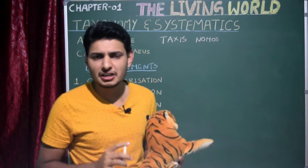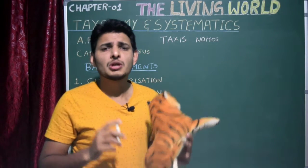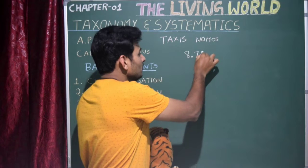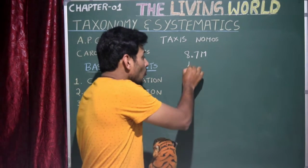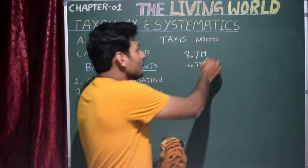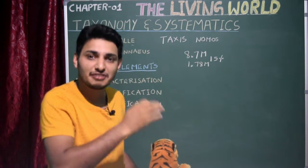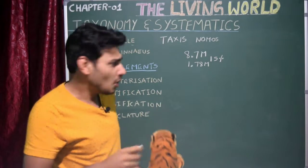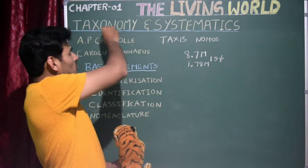Taxonomy is the branch of biology which deals with identification and nomenclature of all living organisms and their classification based on similarities and differences. The total number of species present on Earth is 8.7 million. Out of 8.7 million species, only 1.78 million species have been identified and described — that means only 15 percent. The remaining 85 percent of species have yet to be discovered, and this work is done by numerous taxonomists and biologists.